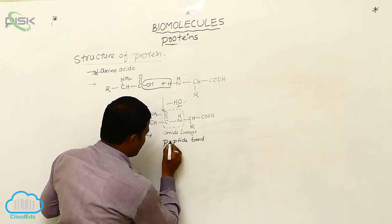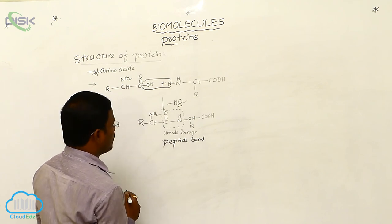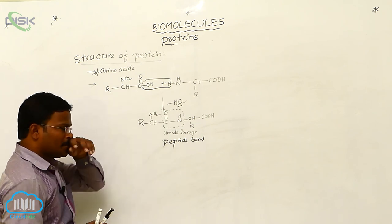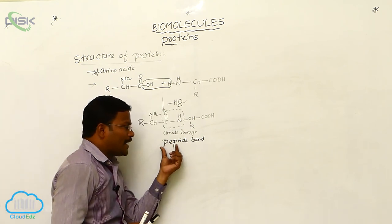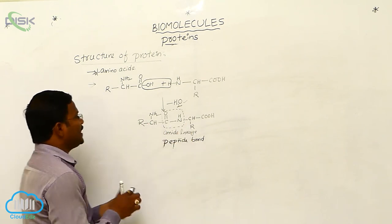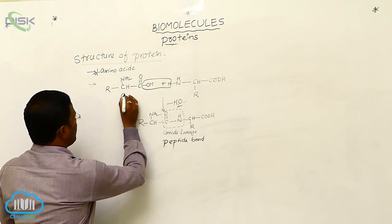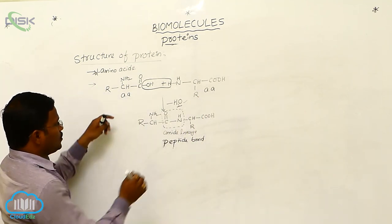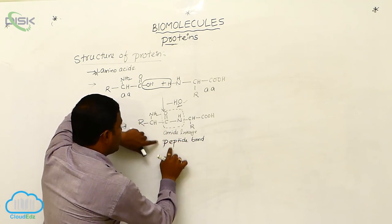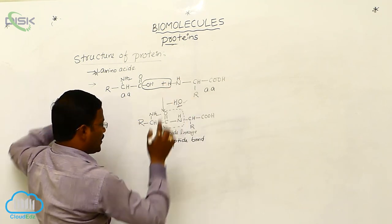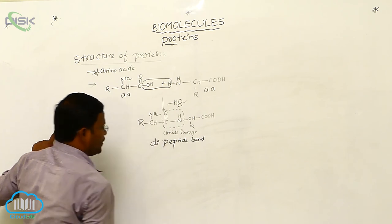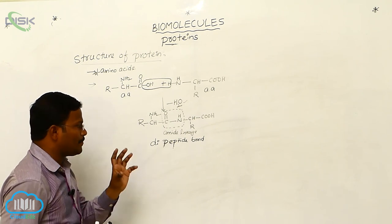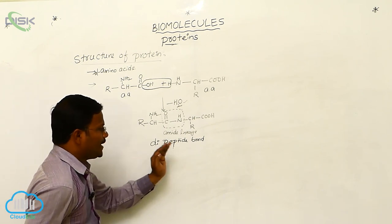The amide bond formed between two same or different amino acids with the loss of a water molecule is called a peptide bond. When this peptide bond results from the joining of two amino acids, it is called a dipeptide bond, and the resulting structure is a dipeptide.